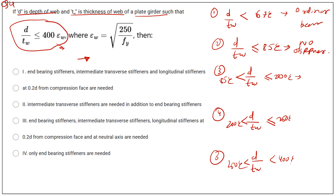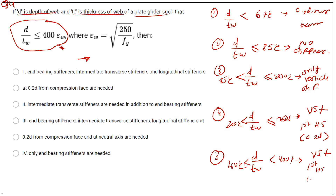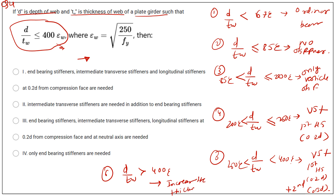For d/tw between 200ε and 250ε: vertical stiffeners plus first horizontal stiffener at 0.2d are provided. For the next range: vertical stiffeners plus first horizontal stiffener at 0.2d plus second horizontal stiffener at 0.5d are provided. If d/tw exceeds 400ε, increase the thickness of the web. For this question, the third option is correct: end bearing stiffener, intermediate transverse stiffener, and longitudinal stiffener at 0.2d from the compressive flange.